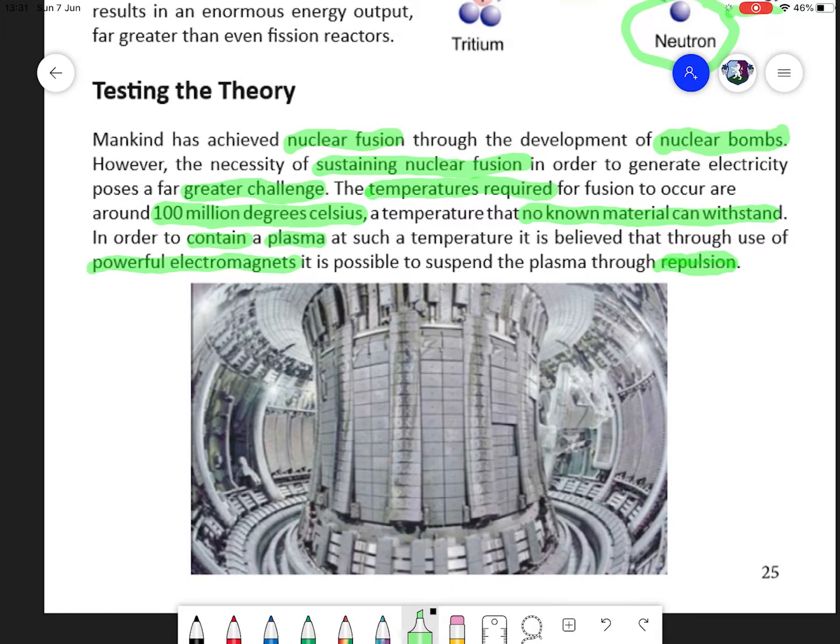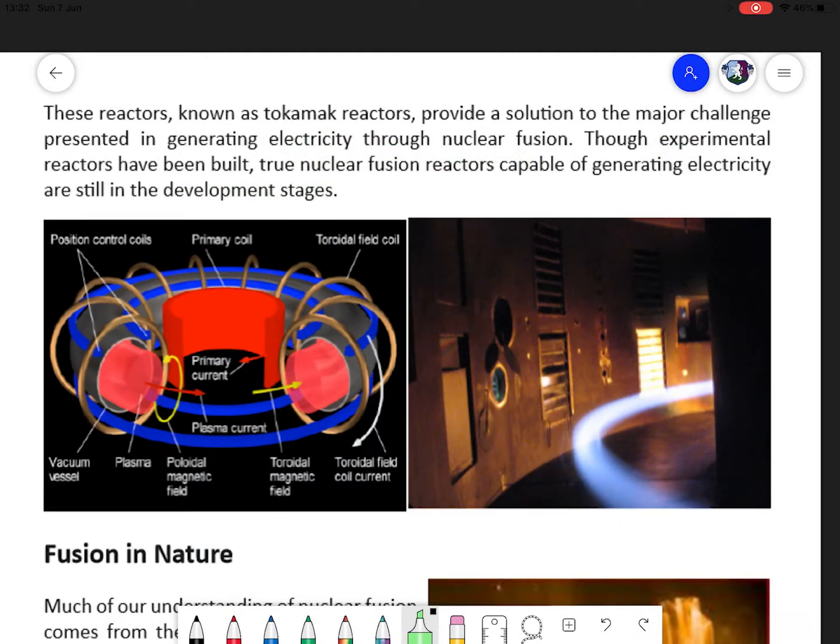This is quite a difficult engineering feat if you can imagine it. This diagram here of a tokamak reactor is demonstrating where this would occur. You can see the donut shape of it means that the plasma would be floating within, not in contact with any surface.